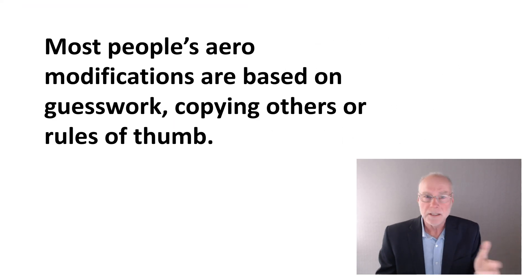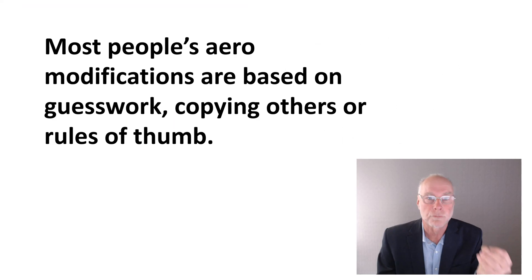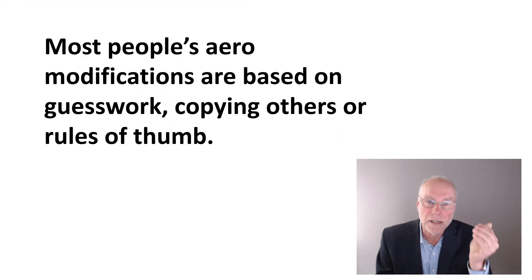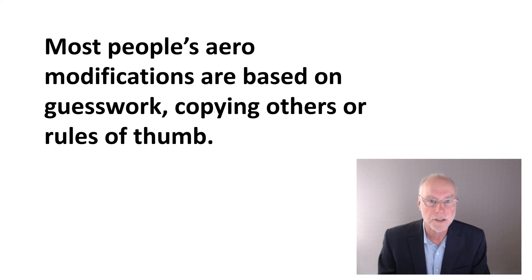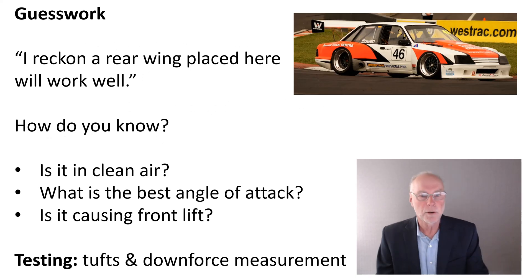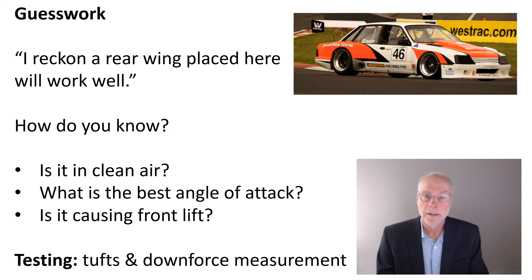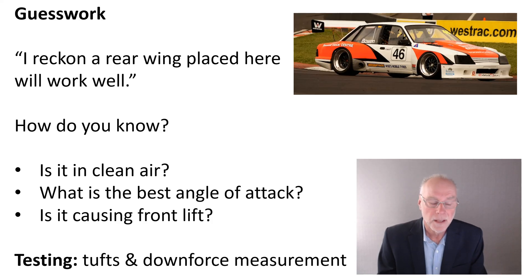Most people — I'd say 99.9% of people — base their aero modifications on three things: guesswork, copying others, or just rules of thumb. Let's start with guesswork. Someone says, 'I reckon a rear wing placed here will work well.' But how do you know? Is the wing in clean air? What is the best angle of attack for the wing to give best downforce? And is that wing placement causing front lift, as many wings do?